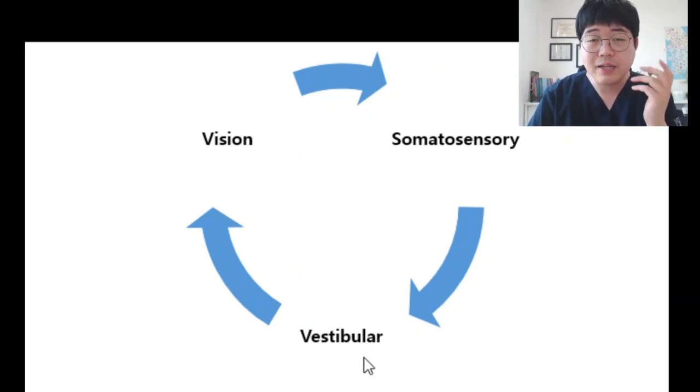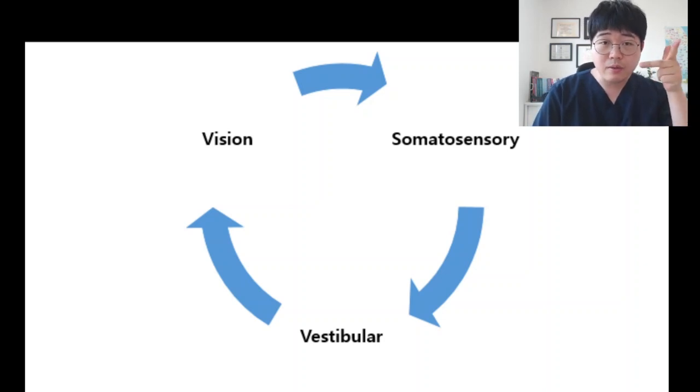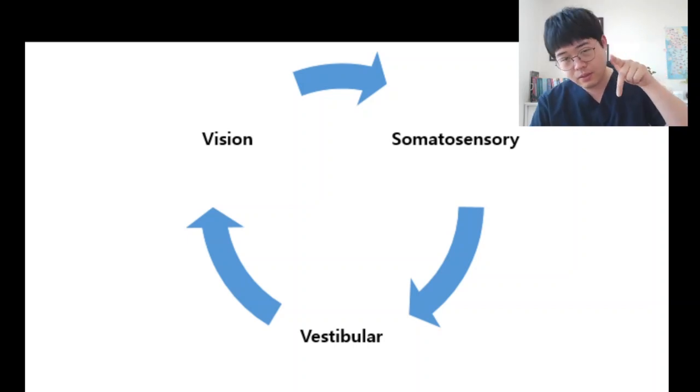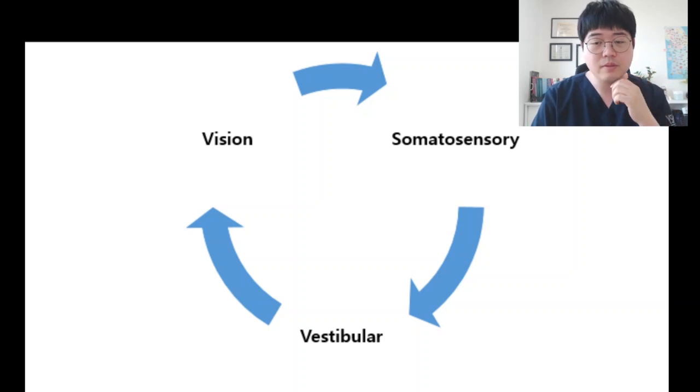And what about the vestibular? Vestibular is for head movement. Inside of the ears, there are vestibular canals. When your head moves forward, your vestibular can sense your head positioning - like this way, and this way, and this way. So vestibular can make your balance.